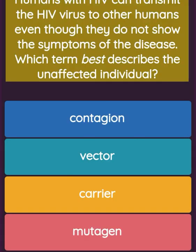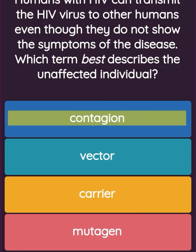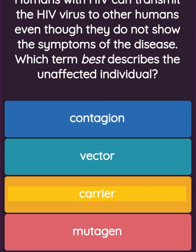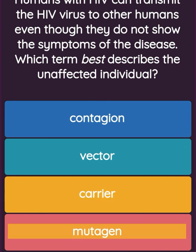A person with HIV can transmit the HIV virus to other humans even though they do not show the symptoms of the disease. Which term best describes the unaffected individual? Option one: contagion. Option two: vector. Option three: carrier. Option four: mutagen.